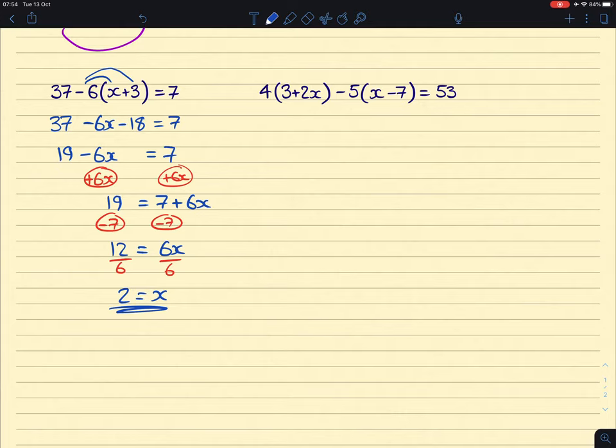The next one, we have 2 pairs of brackets to expand. It doesn't really matter which order you do them in. We can do them all in the first line. So we can do 4 times 3 for 12, 4 times 2x for a plus 8x, a minus 5 times x gives us a minus 5x, and then a minus 5 times a minus 7 will give us a positive 35. And then that equals 53.